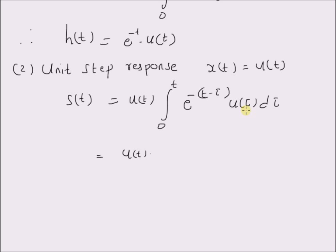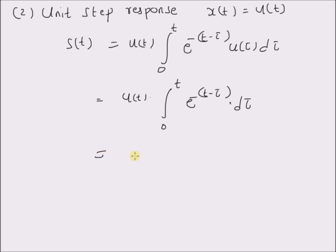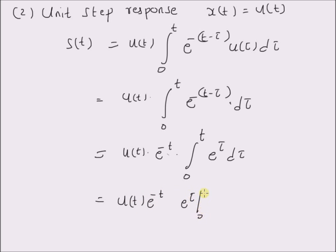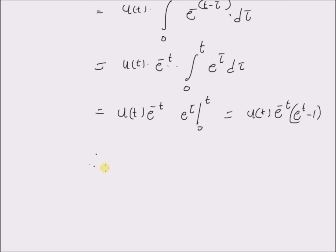This is equal to u of t multiplied by — since the input is u of t, that is a unit step signal, this value is equal to 1 only for tau greater than or equal to 0. So by using the definition of the unit step signal we have the integral from 0 to t of e power minus (t minus tau) d tau, which is equal to u of t multiplied by e power minus t multiplied by the integral from 0 to t of e power tau d tau, which is equal to u of t times e power minus t times [e power tau] from 0 to t.